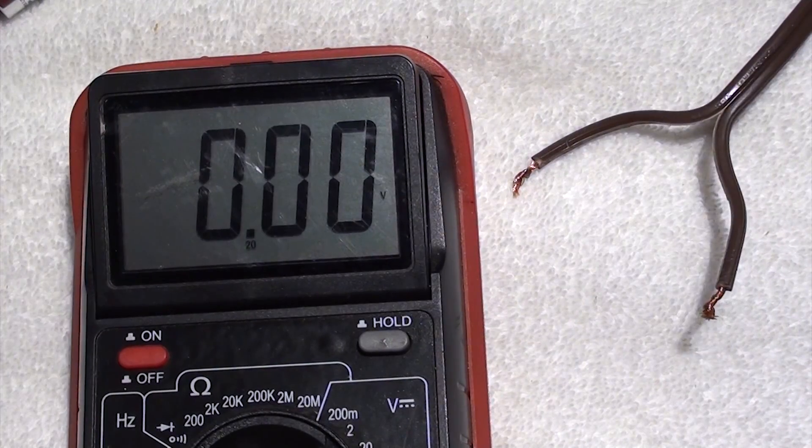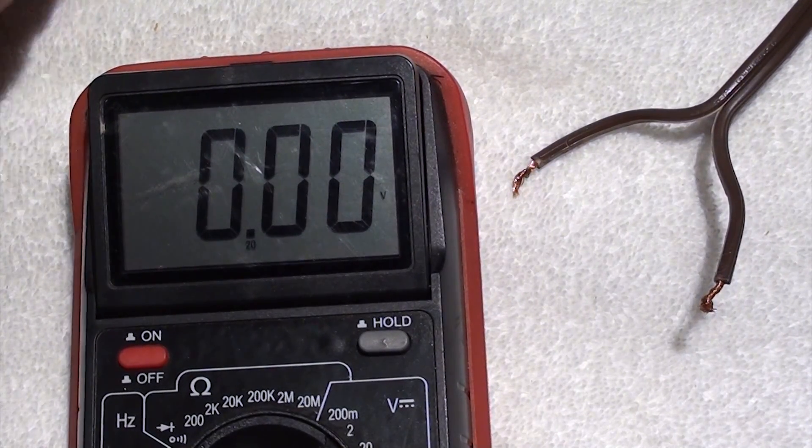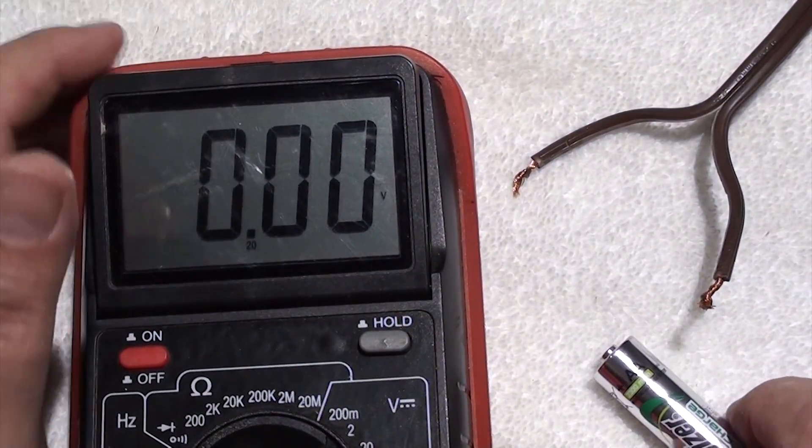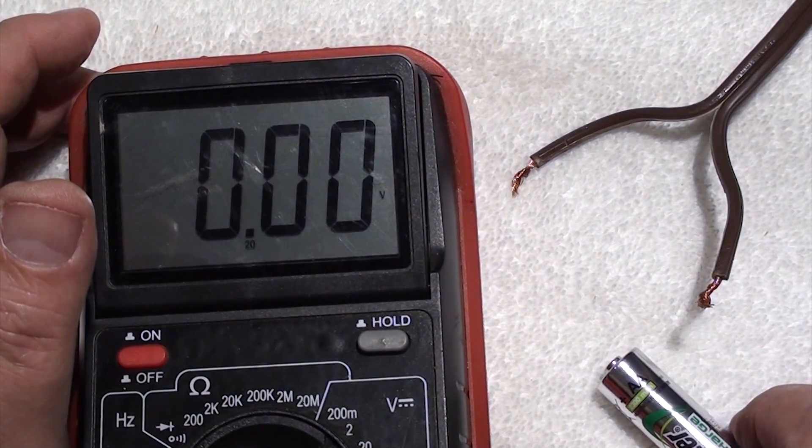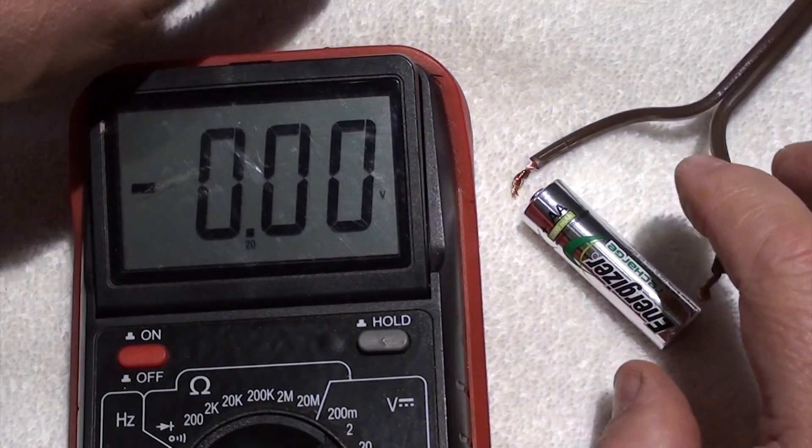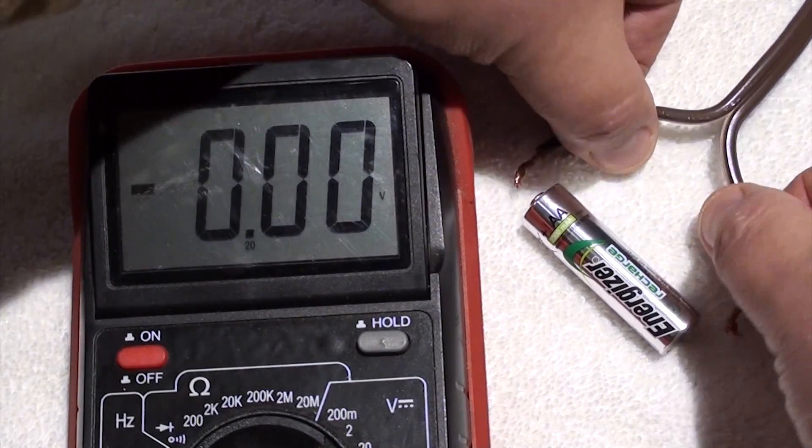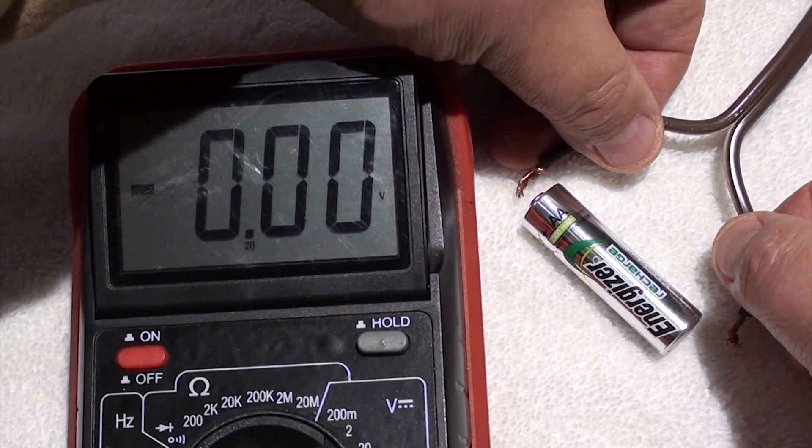What you're going to do is take the dead battery and take the two wires and touch the battery on each end. Make sure you connect positive to positive and negative to negative. You're going to touch it for a second or two. You're going to do this two to three times really quick as shown.